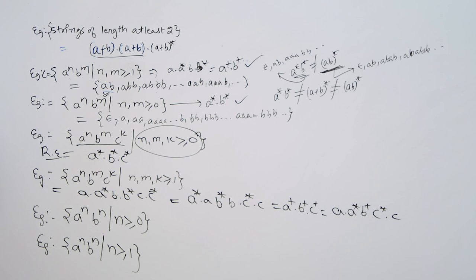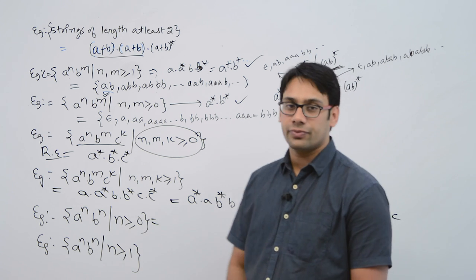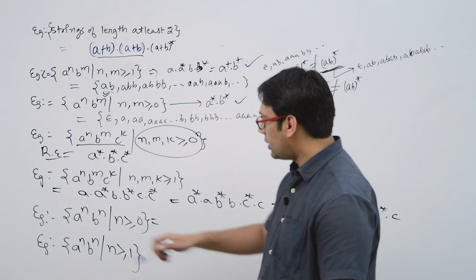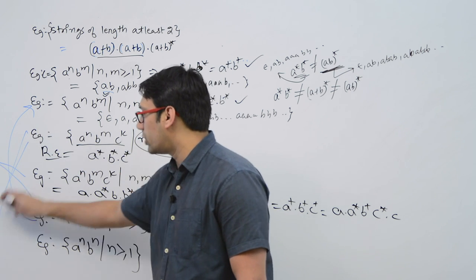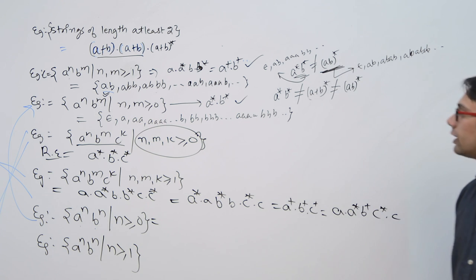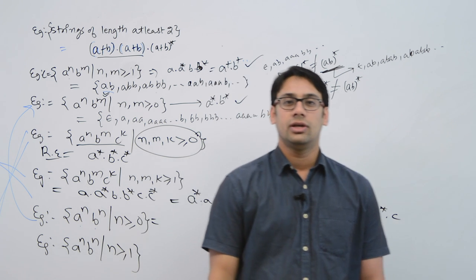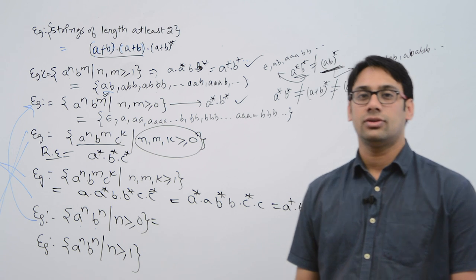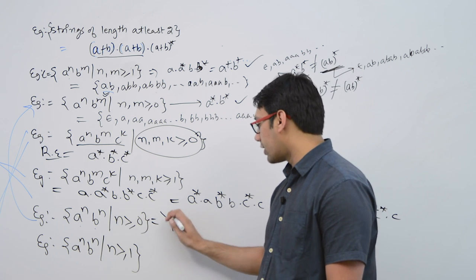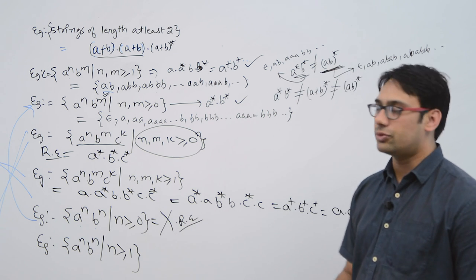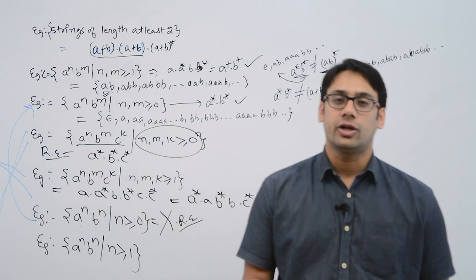Now, consider a^n b^n where n ≥ 0. Can you make a regular expression for this? This language is NOT equivalent to a*b* — a big no. They are not equivalent because in a*b*, the number of a's and b's may not be equal, but in a^n b^n, the number of a's and b's must be exactly equal. These two are not representing the same language at all.